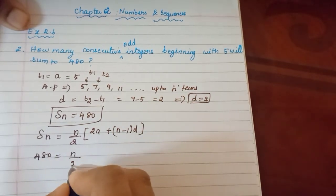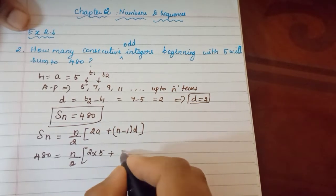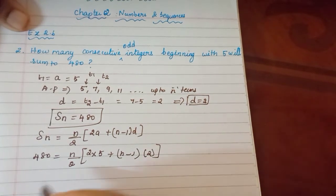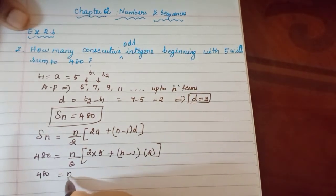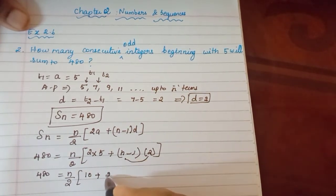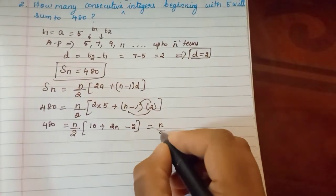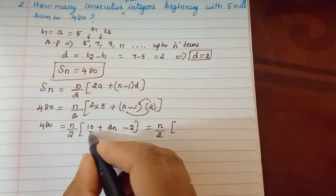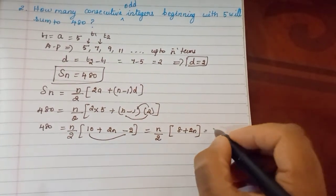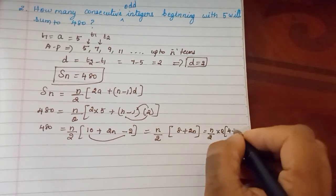Now substituting the values: 480 = (n/2) into (2 × 5 + (n−1) × 2). That gives 480 = (n/2) into (10 + 2n − 2), which simplifies to (n/2) into (8 + 2n). Taking 2 as common factor: (n/2) into 2 into (4 + n).